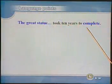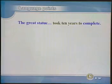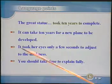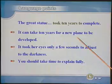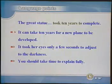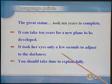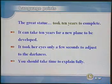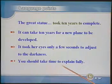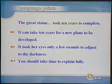首先请看课文中的这句话：The great statue took ten years to complete. 这句话的意思是，这座雕像花了十年时间才完成。Take some time to do something 是一个很常用的句型。请多看几个例句：It can take ten years for a new plane to be developed. 有时要花上十年时间才能研制出一种新型的飞机。It took her eyes only a few seconds to adjust to the darkness. 她的眼睛只用了几秒钟就适应了黑暗。You should take time to explain fully. 你应该花些时间完整地解释。